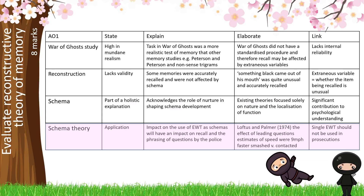Our final paragraph covers schema theory's application in the real world, particularly in relation to criminality and eyewitness testimonies. We use Loftus and Palmer's research here — just a finding, since we're using it evaluatively and don't need to go into procedural detail. Our link is that single eyewitness testimonies should not be used in prosecutions. To finish, we write a balanced conclusion: one sentence about the strengths of the theory and one sentence about its weaknesses.